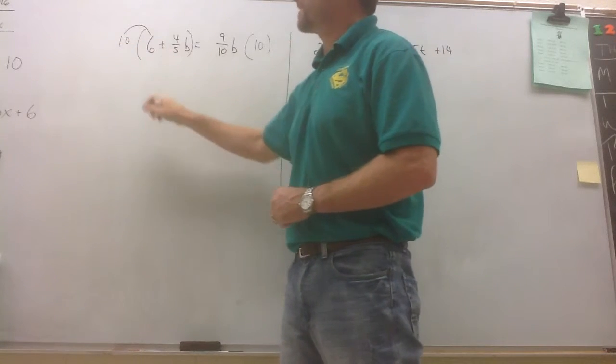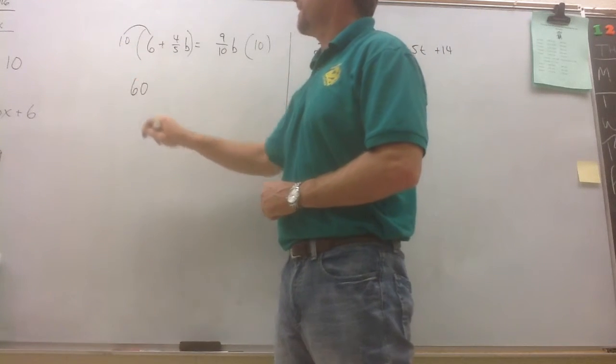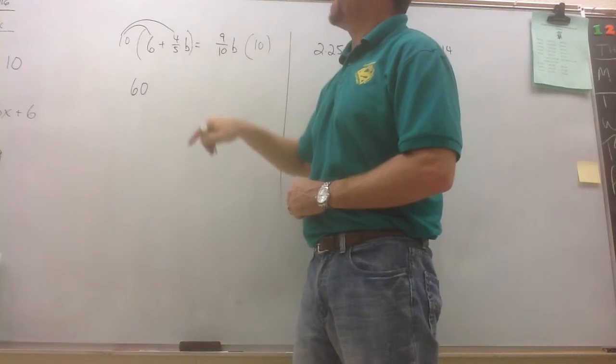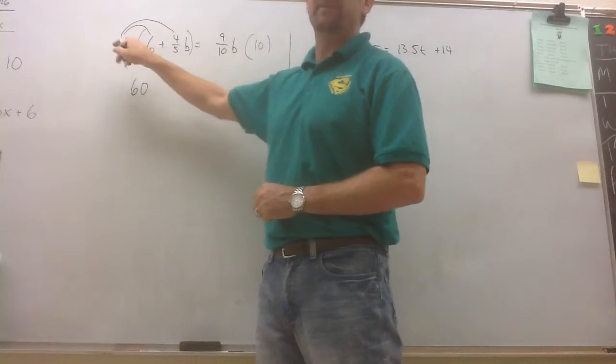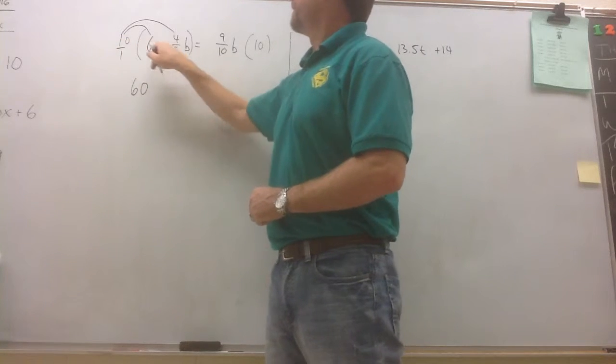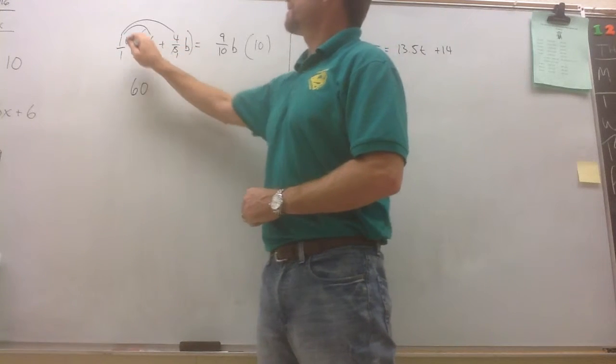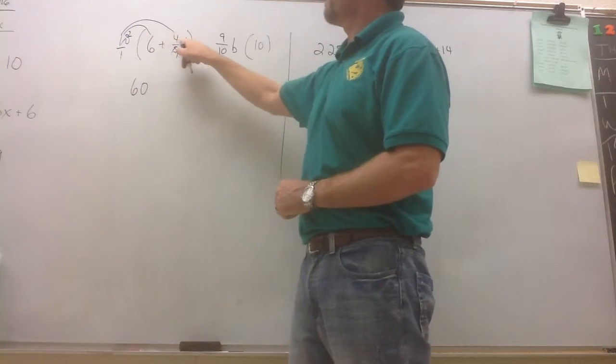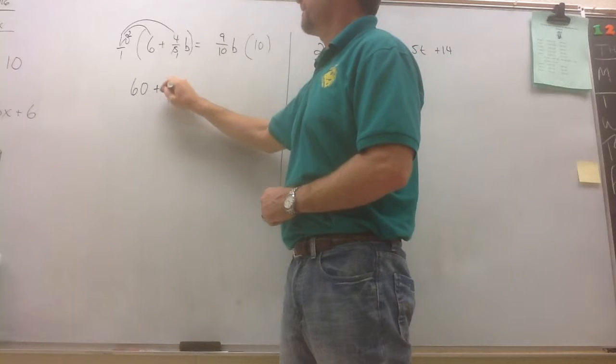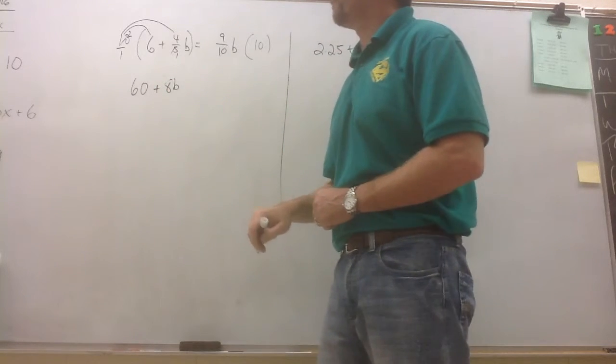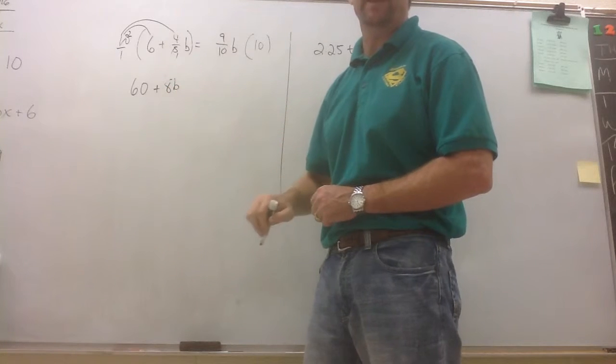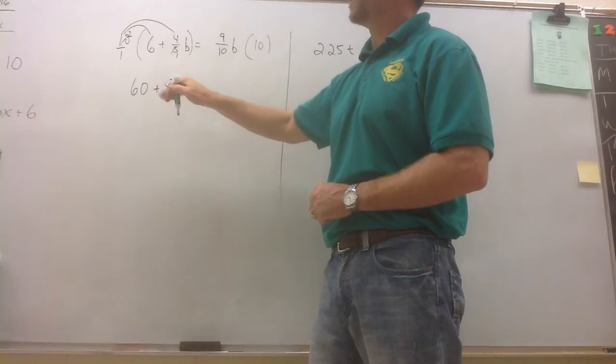So 10 times 6 is 60. And when we do 10 times 4 fifths b, well, let's simplify. 5 goes into 5 once. 5 goes into 10 twice. 2 times positive 4b would give you a positive 8b. 10 times 4 fifths b is 8b. And you notice you've cleared your fraction.